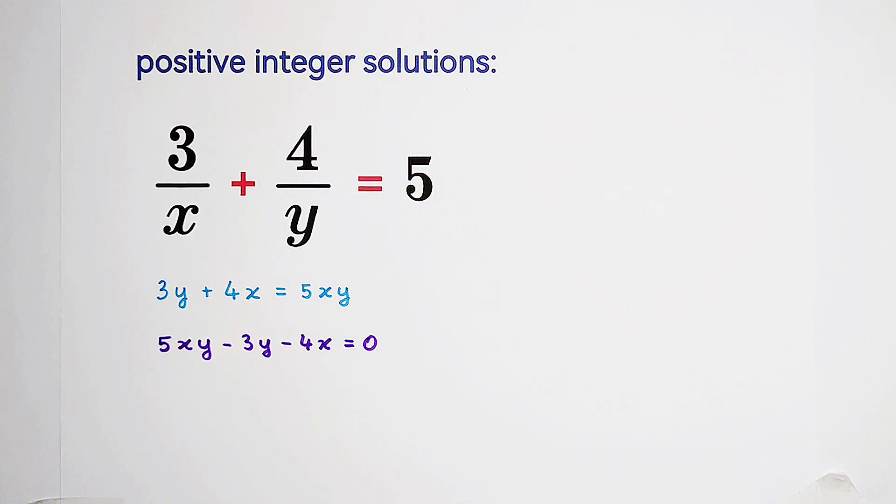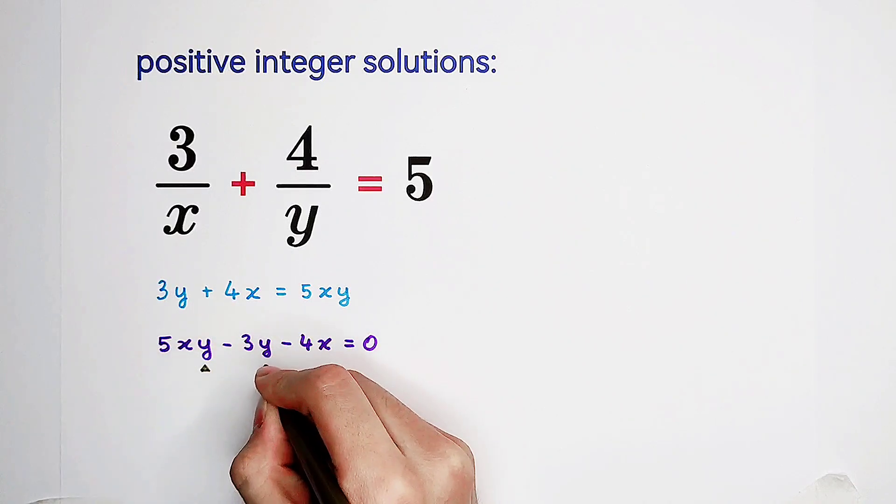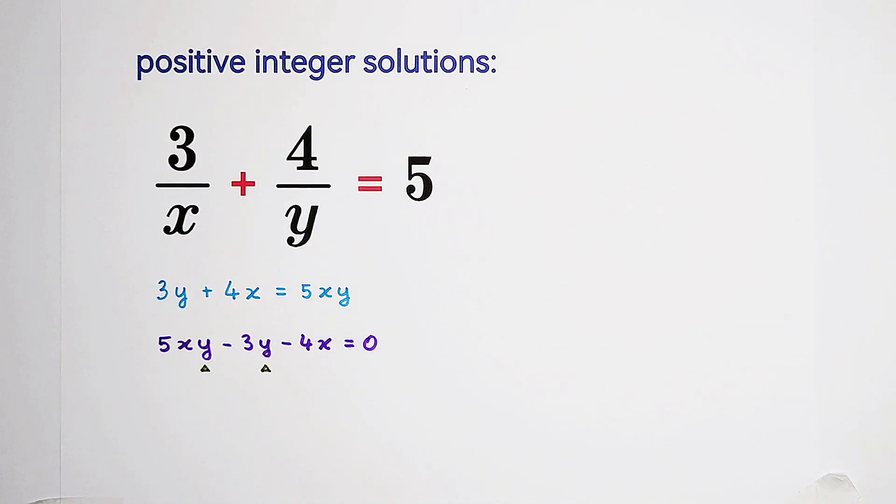Usually, we hope that the left side can be factorized. Now you can see, here is a y here as well. So what shall we do? Take out a y maybe. However, I'm going to do this. I will take out a 5y. Why? Because you see, if we only take out a y in the bracket, we're going to acquire 5x minus 3. However, here is only minus 4x. Very difficult to deal with.